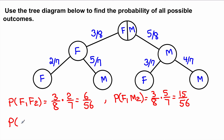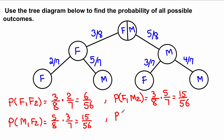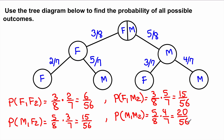If we want the probability that the first candidate is male but the second is female, we follow that path along the branches: 5 over 8 times 3 over 7, which is 15 over 56. And the probability of selecting two males would be 5 over 8 times 4 over 7, which equals 20 over 56. Most of these answers can be reduced. Once again, if we add all the probabilities together we get 6 + 15 + 15 + 20 = 56 over 56, which equals 1.